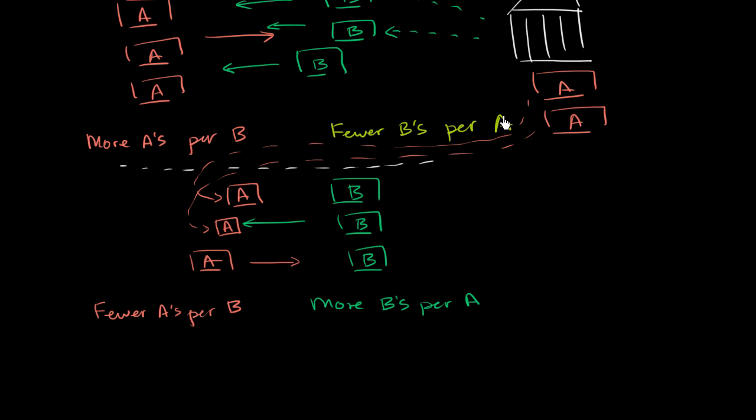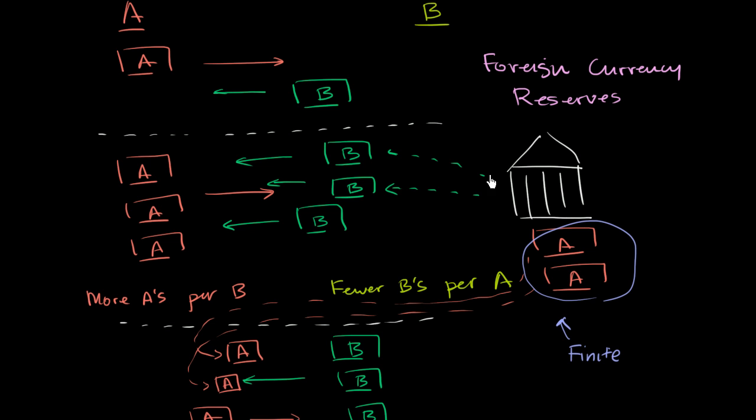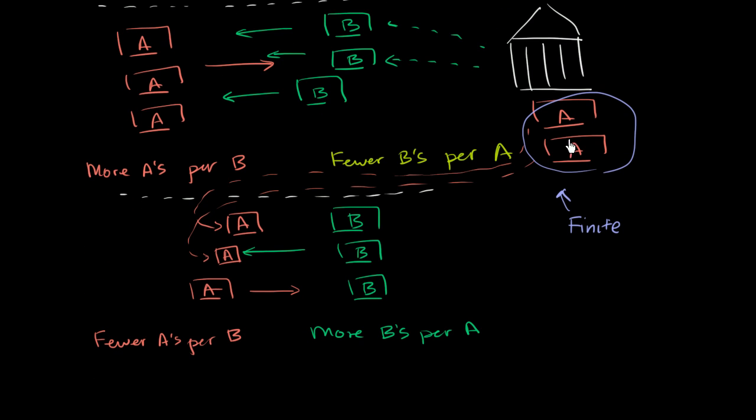Now, the one kink in the system here is that they only have a finite amount of reserves. This right over here is finite. In the previous video when we saw that they were printing their own currency to build reserves, they could do this all day, all night because they have the right to print as much of their own currency as they want. But now they're using reserves of someone else's currency to keep their own currency from being devalued. But they can't print someone else's currency.